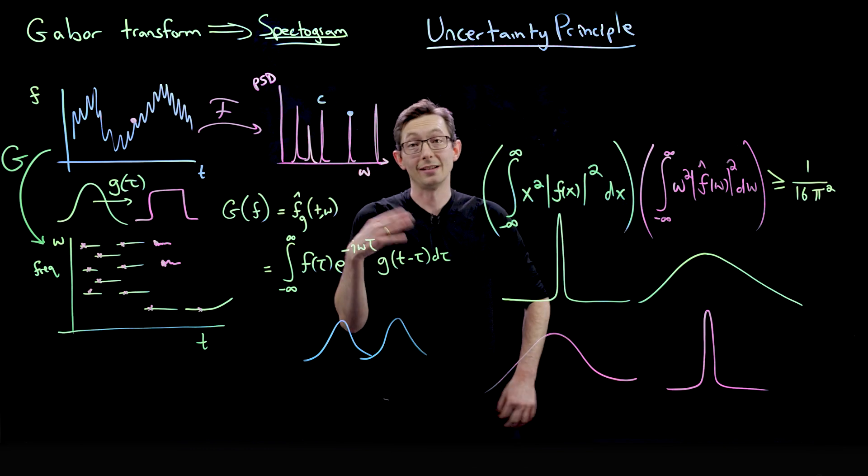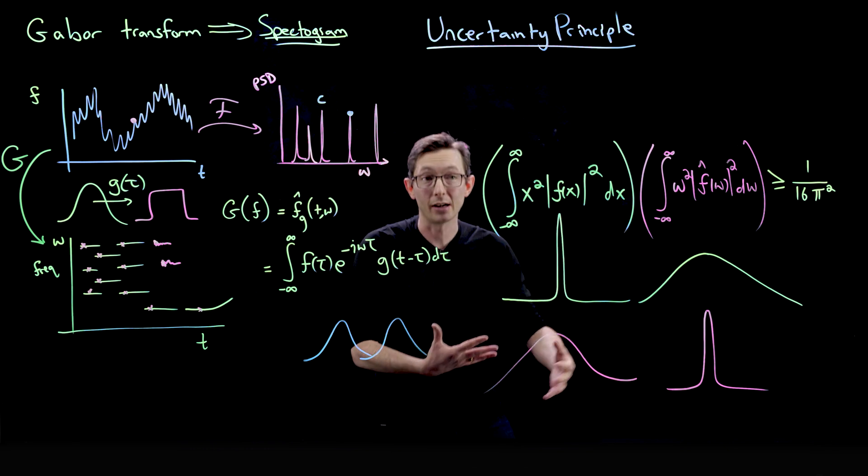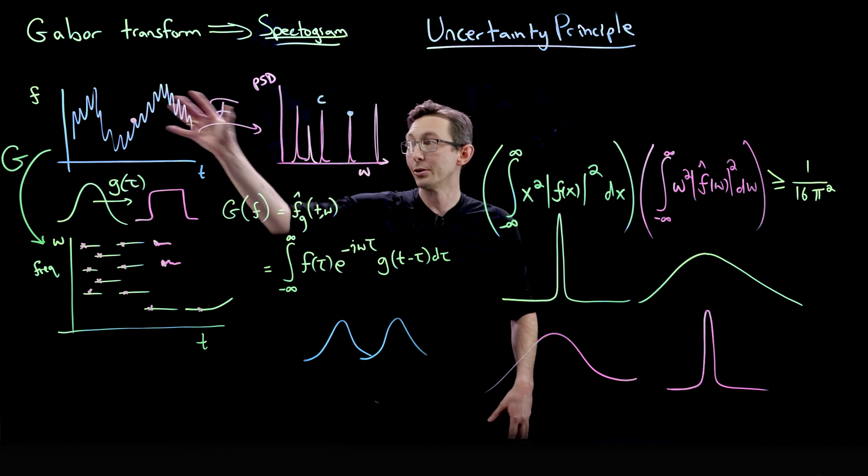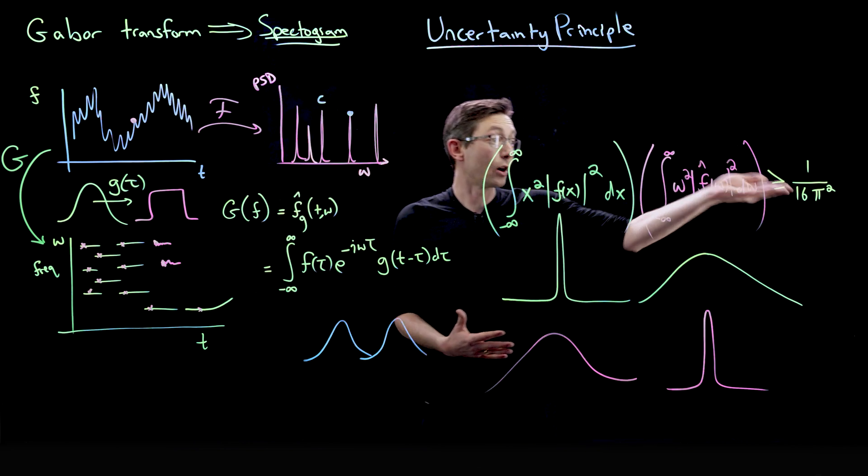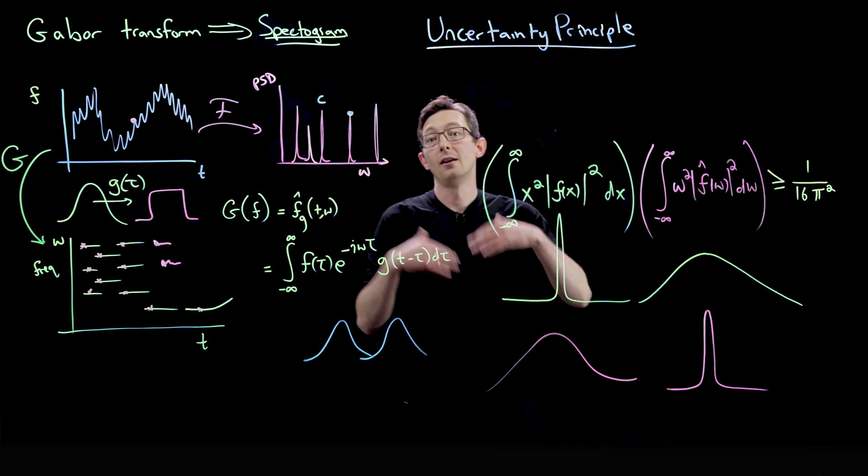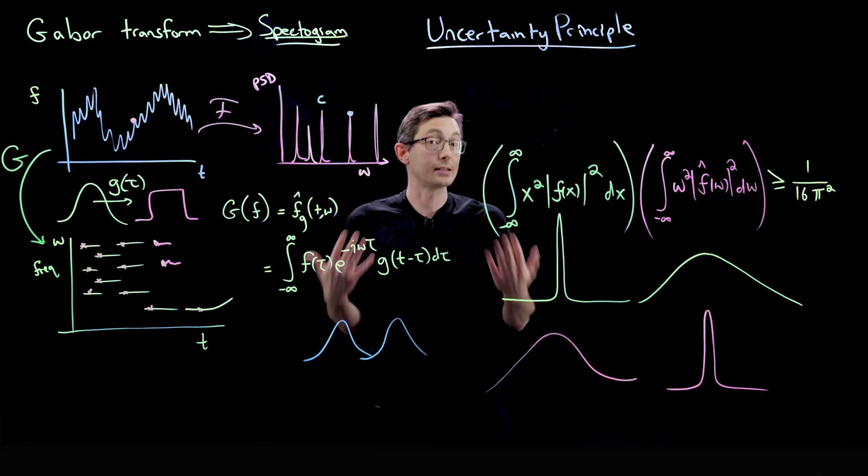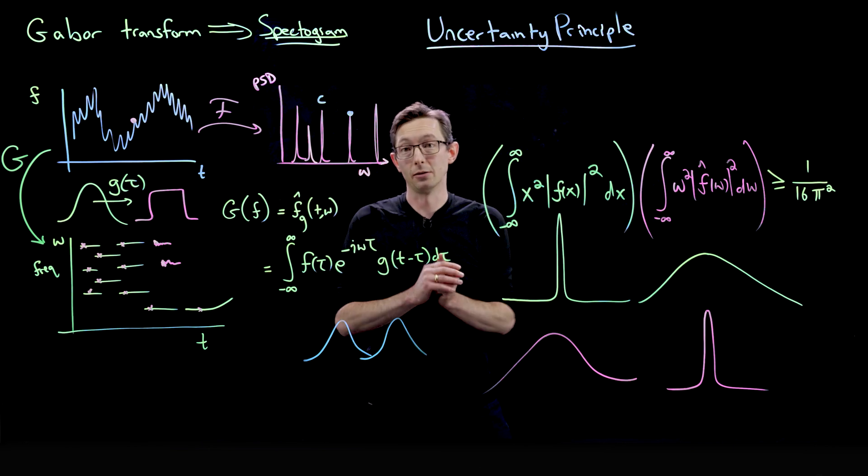And this comes up all over the place. Not just in quantum mechanics, but in signal processing all across the board. You have to be thinking about kind of what your uncertainty limits are because there are fundamental mathematical limits on how much you can measure these two quantities simultaneously. Okay, thank you.